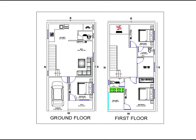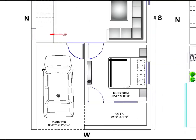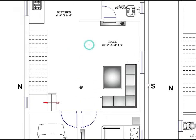Let's get started with the ground floor. Here is the parking area, which is 8 feet by 15 feet — horizontally 8 feet and vertically 15 feet. Here is the entry floor in the middle, which provides access to the living room.